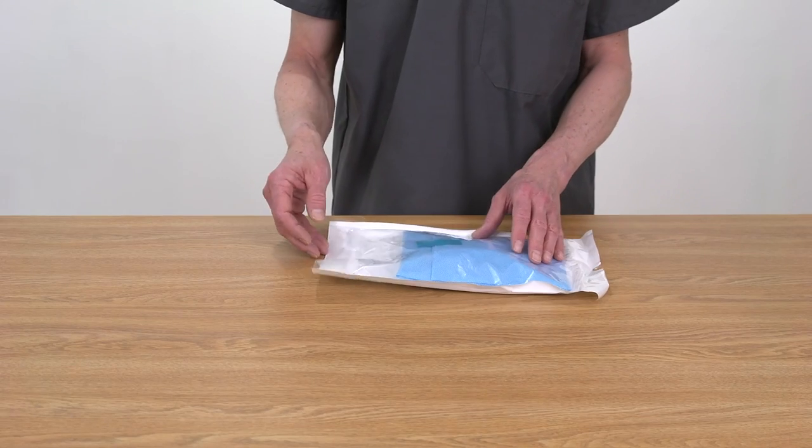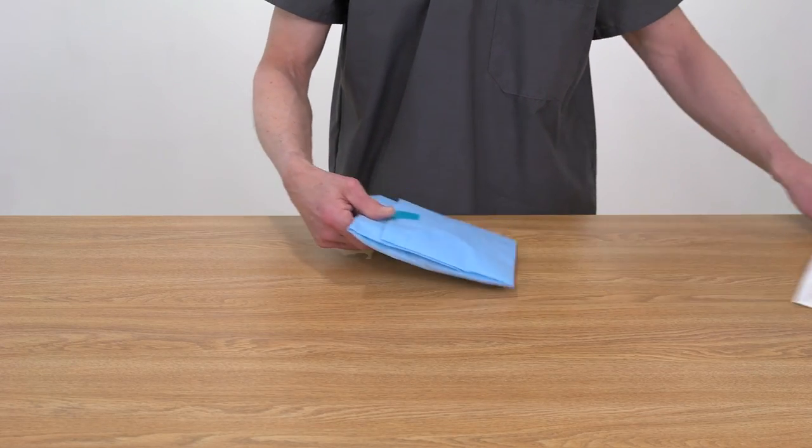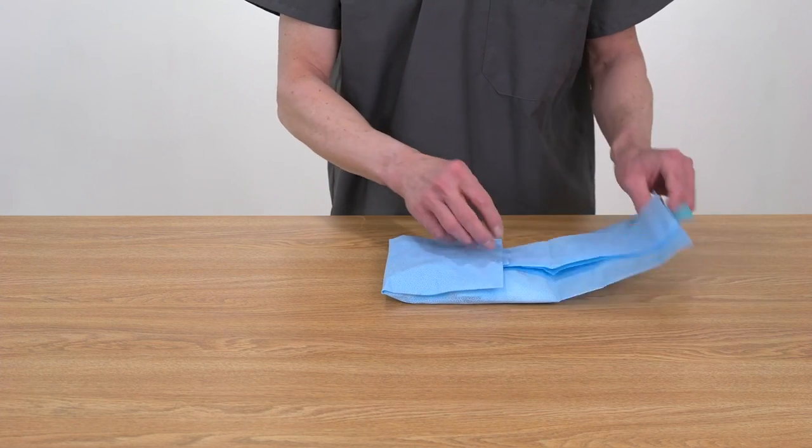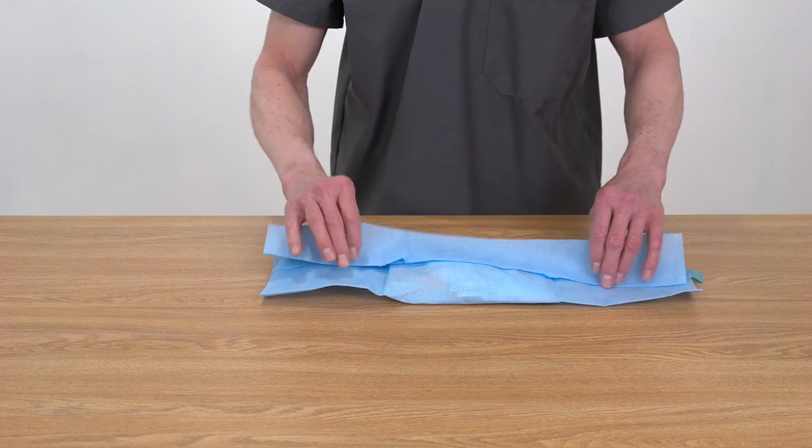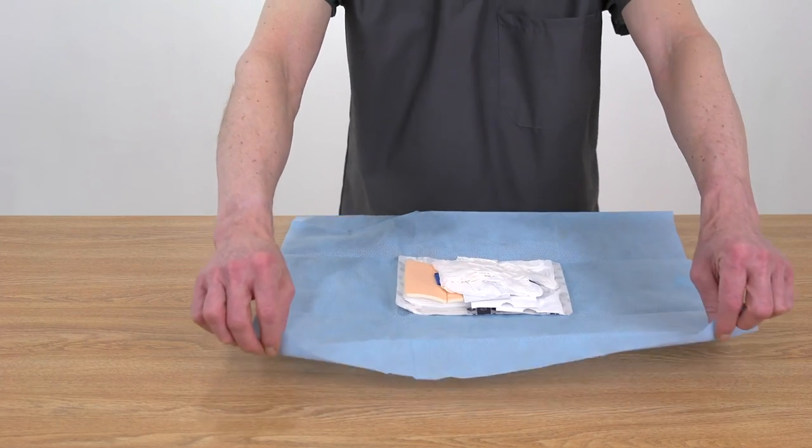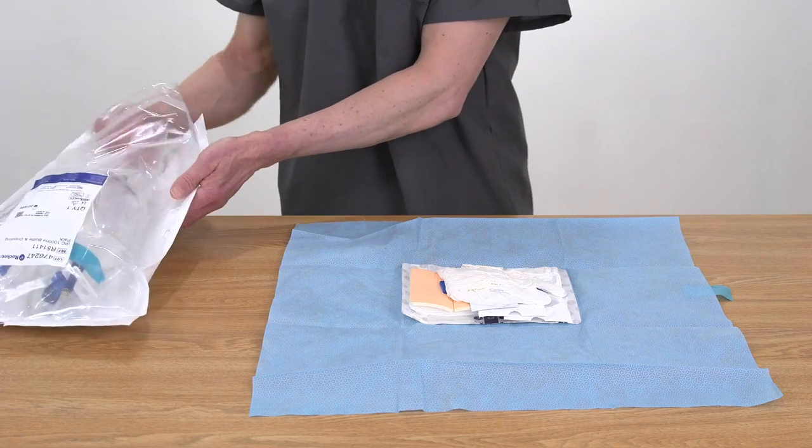Open the procedure pack by peeling the pouch apart. Inside, you will find a blue sterile field. Position this with the tape facing up. Carefully remove the tape and unfold the sterile field, using only the edges or corners. Make sure the contents remain in the center.